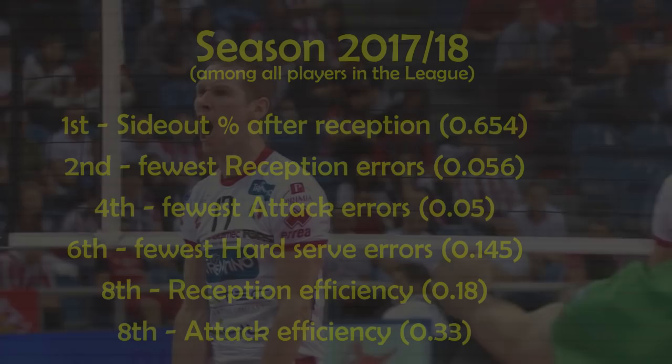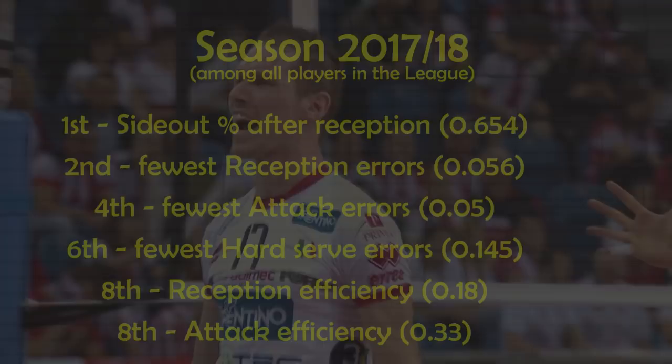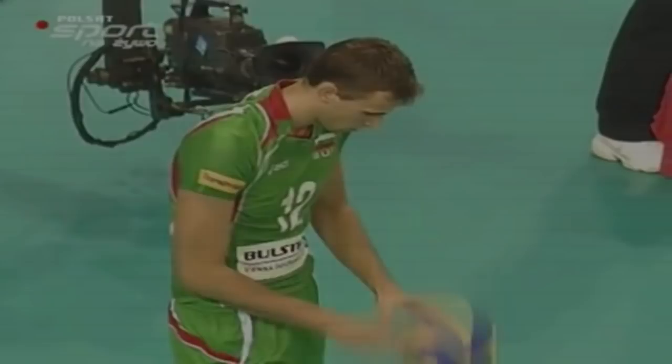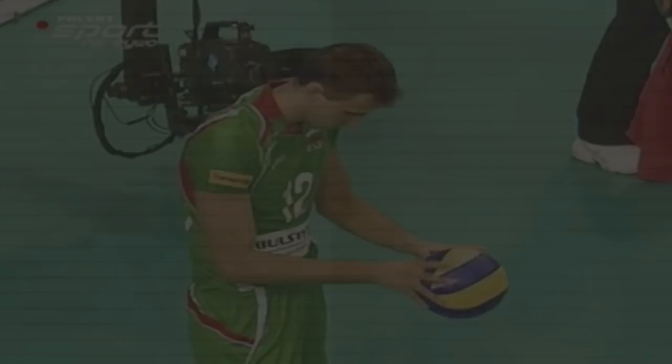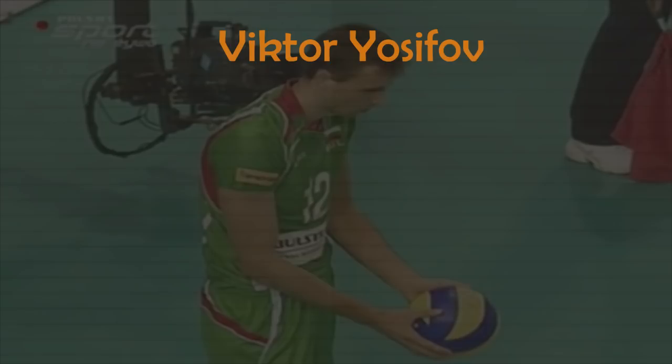In 2009, the head coach of the Bulgarian national team, Silvano Prandi, saw something that everyone else didn't. The Bulgarian volleyball community was shocked when he called up 23-year-old middle blocker Viktor Yosifov of Cherno More — an unknown player at the high level at the time. Only several months later, Yosifov became the best middle blocker at the European Championship 2009.